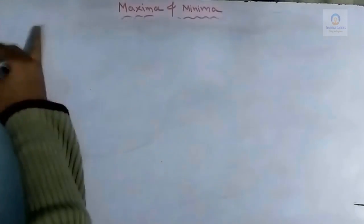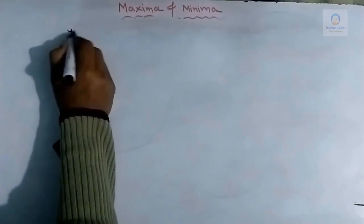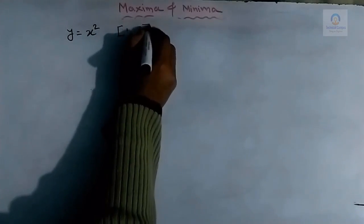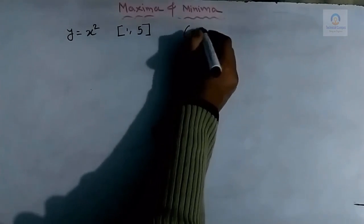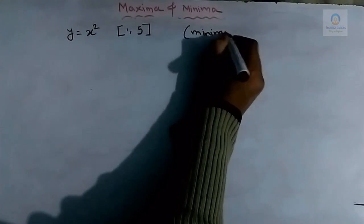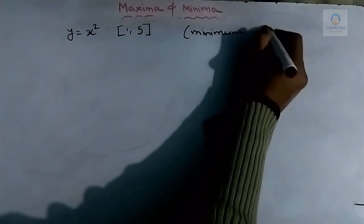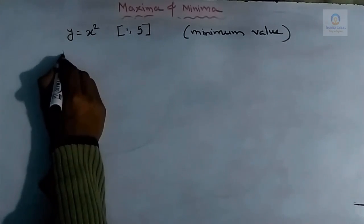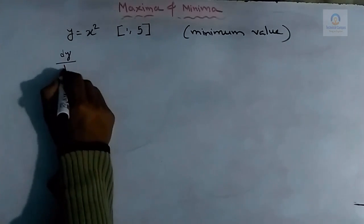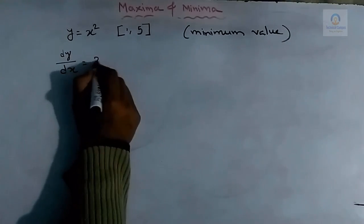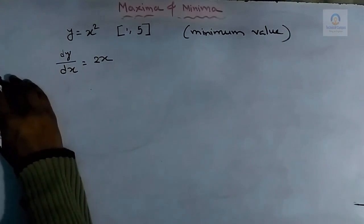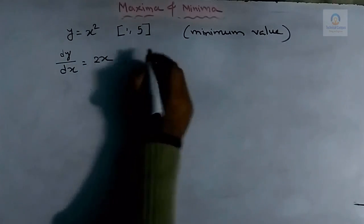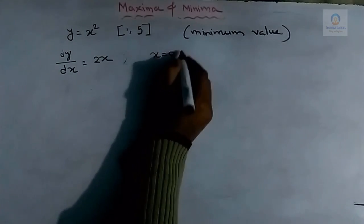The function is y = x² and the interval is [1, 5]. We have to calculate the minimum value. The first step is to take the first differentiation of this function and equate the result to zero in order to find the critical point. If we equate dy/dx to zero, the value of the critical point will be x = 0.